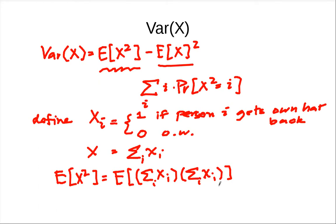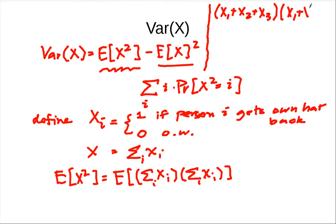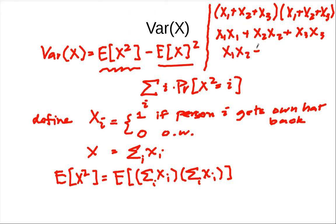If we expand this, let's use a small example with N=3. The product (X1 + X2 + X3) times itself gives terms of the form Xi times Xi — these are the square terms — and terms of the form Xi times Xj for i not equal to j — these are the cross-terms.